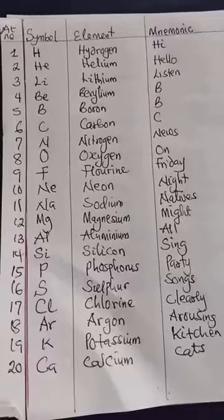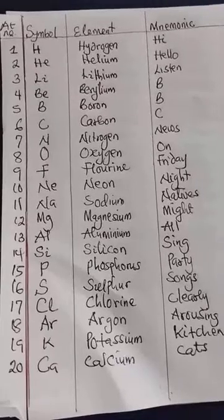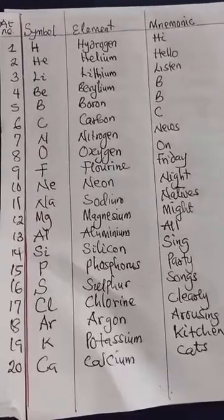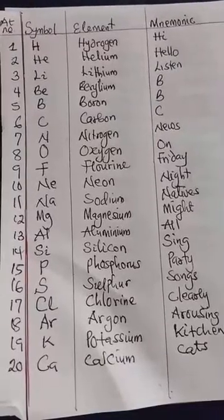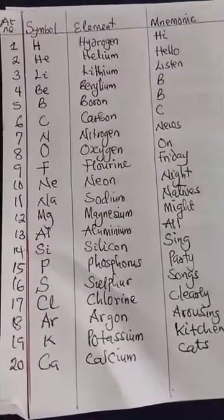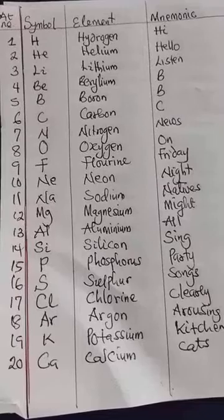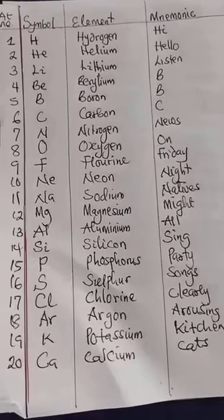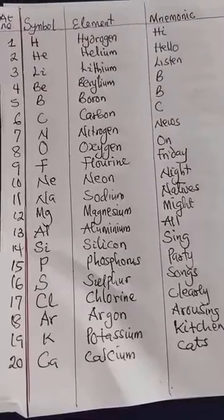In our last class, we looked at just symbols of elements. And like we said, symbols of elements is the spoken language of chemistry. So we're trying to look at the easiest way to remember the first 20 elements. On this table, we are reading the symbols of elements, the names of elements and their increasing order of atomic number. And I will have at the far right a mnemonic to help us each day remember these elements and their symbols.